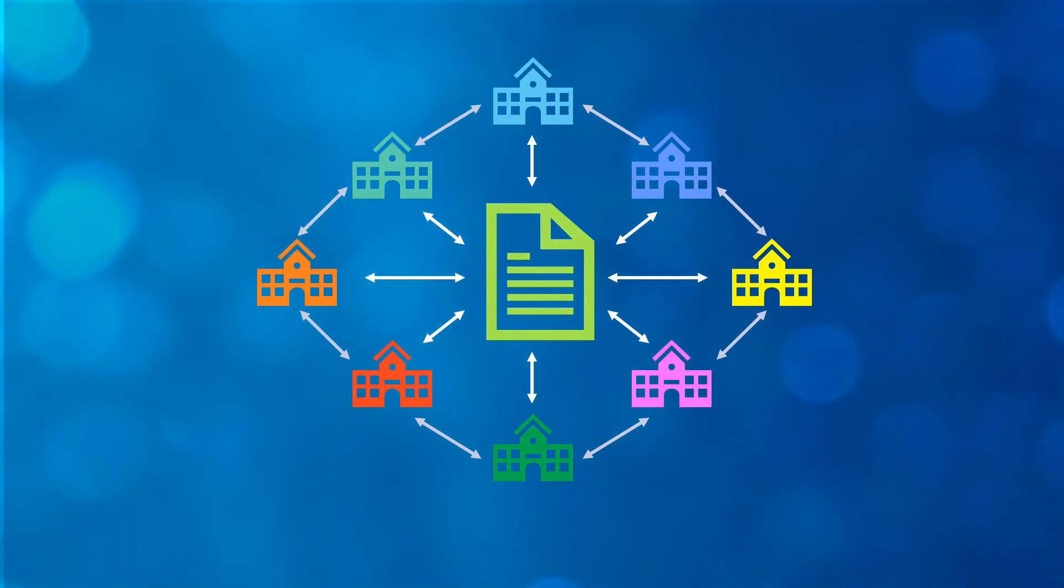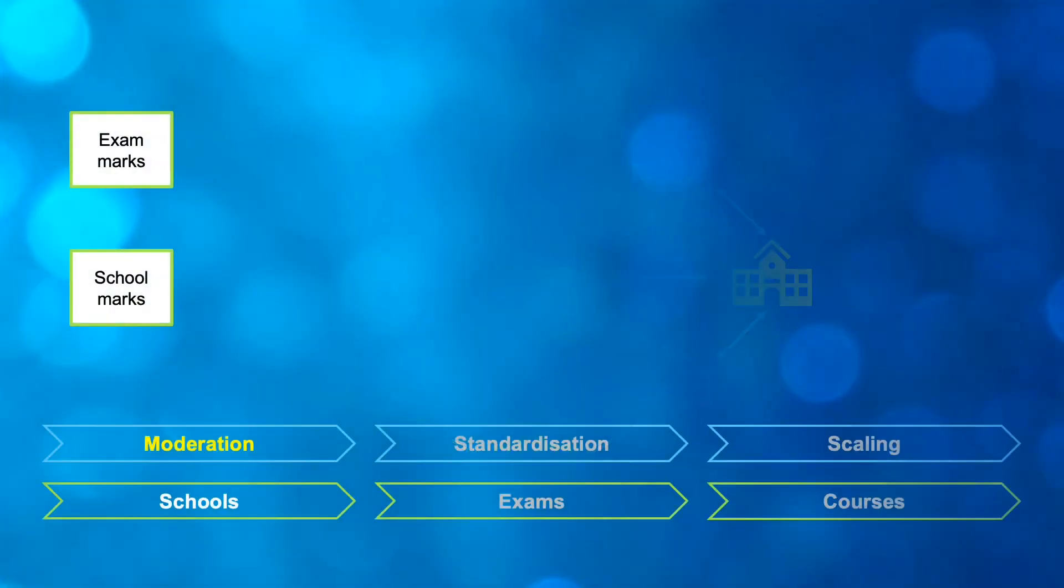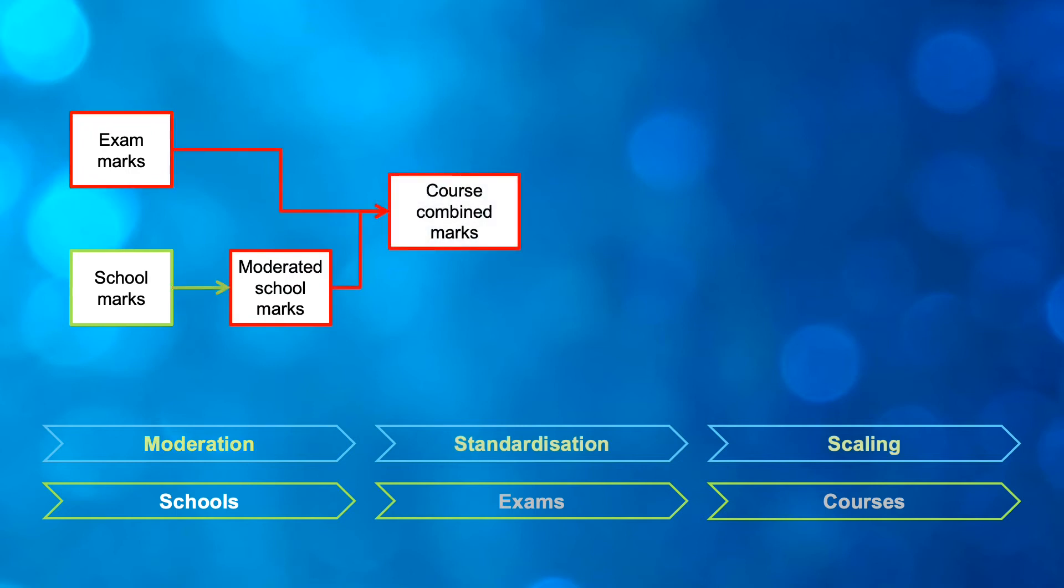Once we've done that, then your moderated school marks and your exam marks are combined to form a combined mark for that course. It's good to remember that 50% of your final mark is actually your school mark. So if you do well throughout the year, not only are you well prepared for the exam, but you actually have 50% of your final mark already sorted out before you head into the exam.